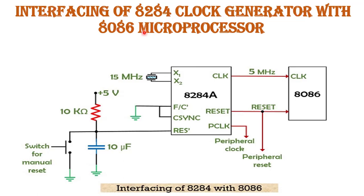Now, interfacing of the 8284 clock generator with the 8086 microprocessor. The clock signal generated by the 8284 is given directly to the 8086 microprocessor at 5 MHz. The reset signal is directly given to the 8086 microprocessor. The peripheral clock signal is given to devices with lower frequency requirements, such as the 8254. X1 and X2 are the input pins of the internal crystal oscillator, connected to an external 15 MHz crystal. The F/C (frequency/crystal) pin is grounded to select the external crystal. This is the description of interfacing of the 8284 with the 8086 microprocessor.